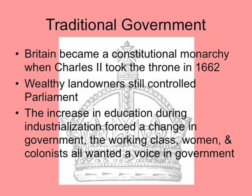The traditional government in Britain: we already learned about the English Civil War, which is when Cromwell and Parliament were fighting against Charles I, and he ends up losing his head. Britain becomes a constitutional monarchy when Charles II takes the throne in 1662. Now, wealthy landowners still control Parliament. The increase in education during industrialization forces a change in the government — the working class, women, and colonists all want a voice in government. So while you're having industrialization, you also get the American Revolution, and then the working class and women fighting for the right to vote.